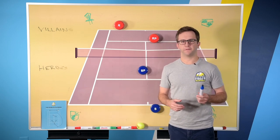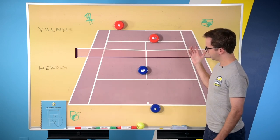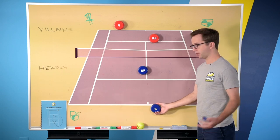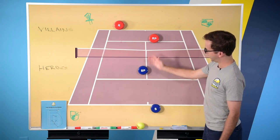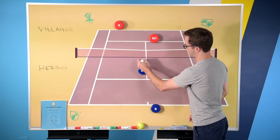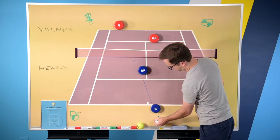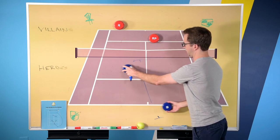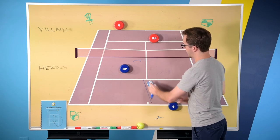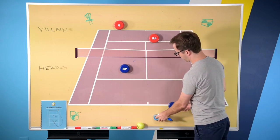So you and your partner are in the I formation. In this case we're talking about the deuce court, and the I, if you don't know, it looks like an I, right? You know, like there's the letter I. So you're kind of in that line versus being like that, which is the more standard formation.